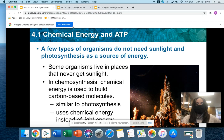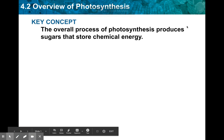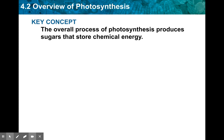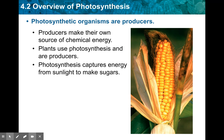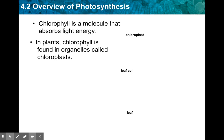That's it for section 4.1. Now we're moving on to section 4.2, which is a broad overview of photosynthesis — we'll go into the specific steps in the next section. The main goal of photosynthesis is that you are producing sugars that store chemical energy. Photosynthetic organisms are producers: they make their own source of chemical energy using photosynthesis to capture energy and convert it into sugar.